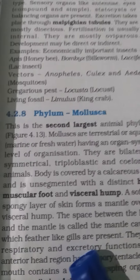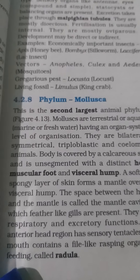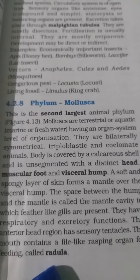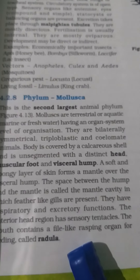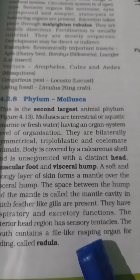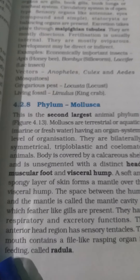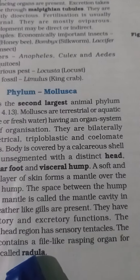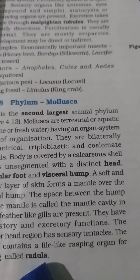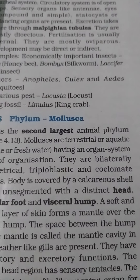Inside the mantle cavity, feather-like gills serve as the respiratory organs. Molluscs have a file-like rasping organ for feeding known as the radula, which is a very well-developed mouthpart.